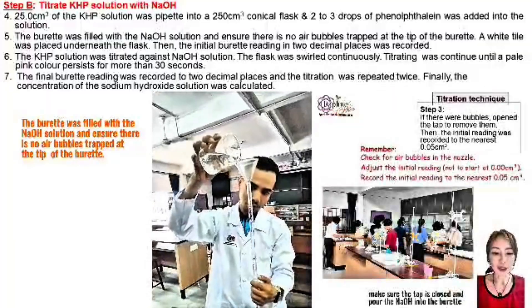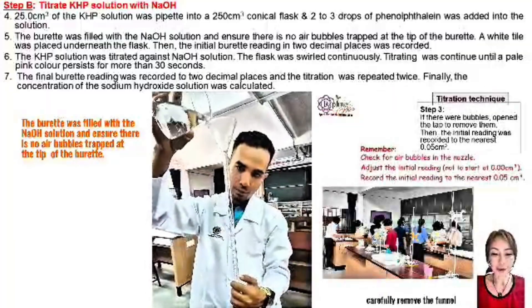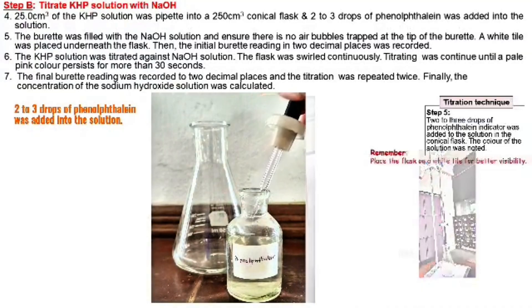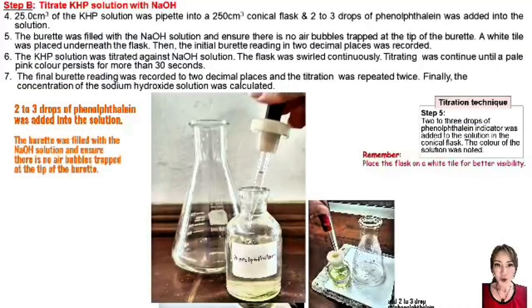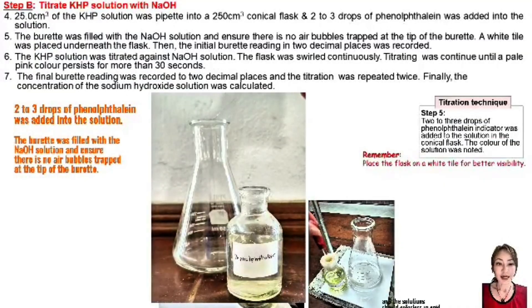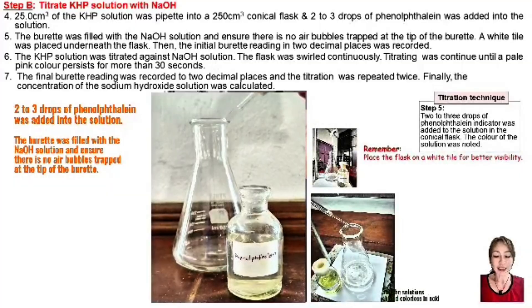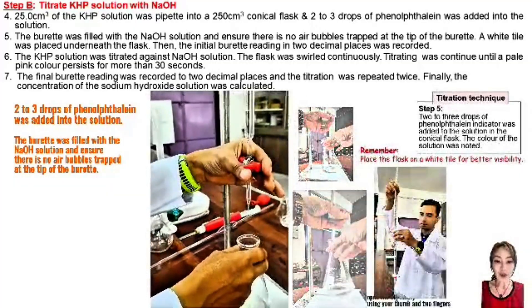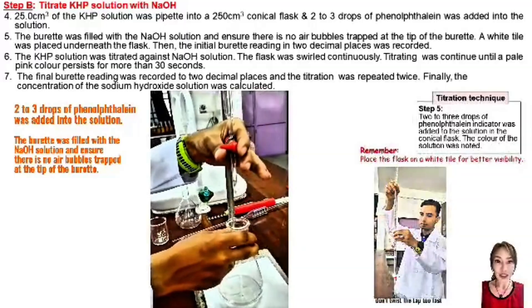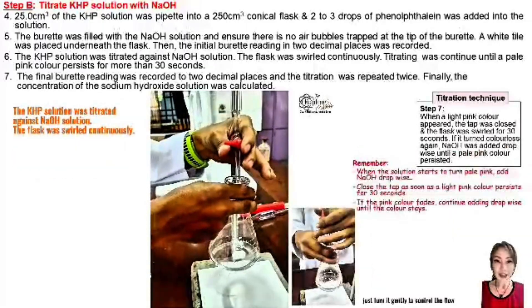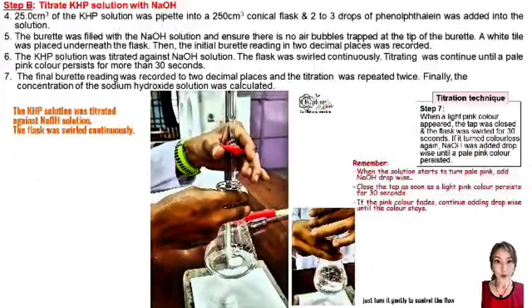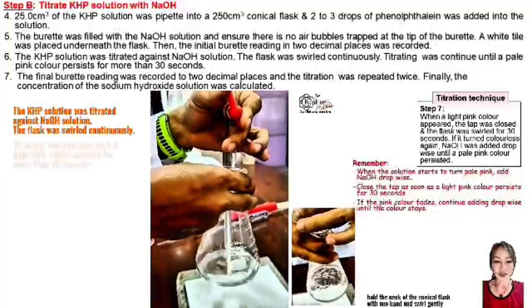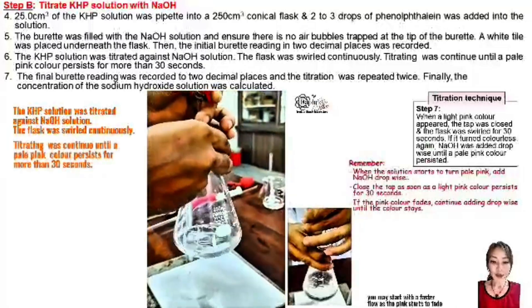Pour the NaOH into the burette carefully, then remove the funnel. Add 2 to 3 drops of phenolphthalein — the solution should be colorless in acid. Open the tap slowly using your thumb and two fingers; don't twist the tap too fast. Turn it gently to control the flow. Hold the neck of the conical flask with one hand and swirl gently. You may start with a faster flow as the pink color starts to fade.